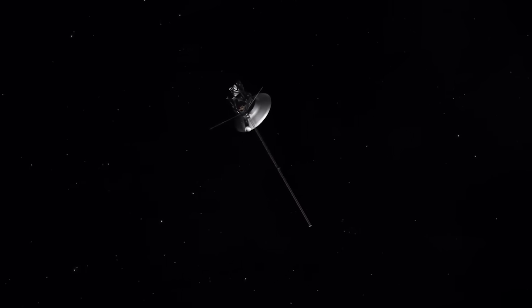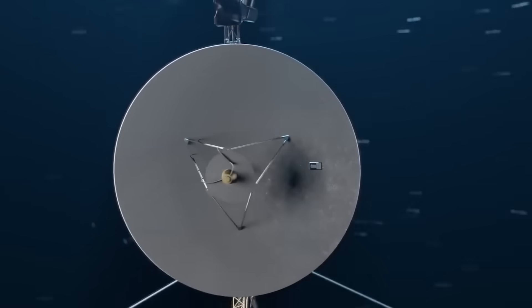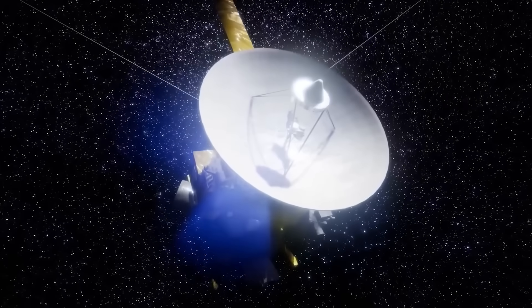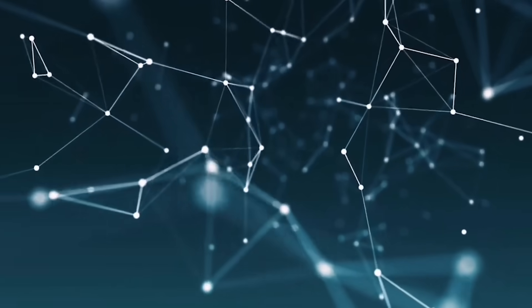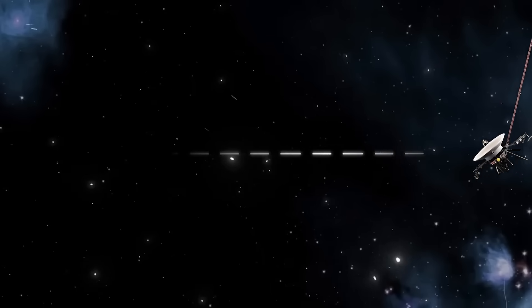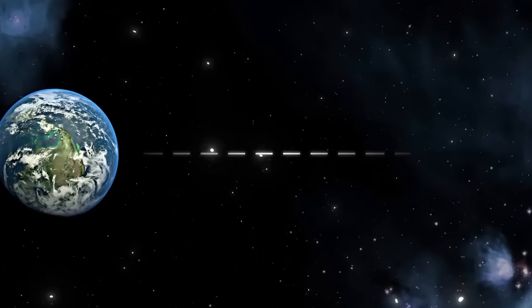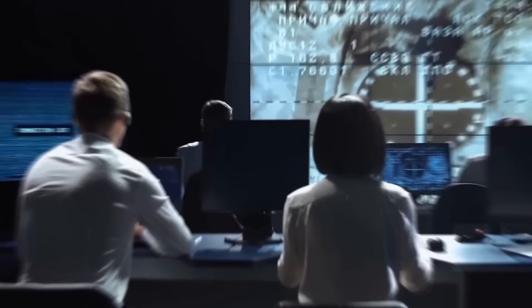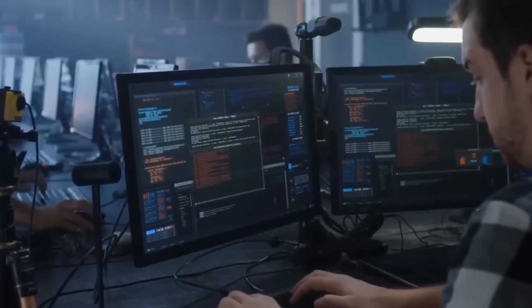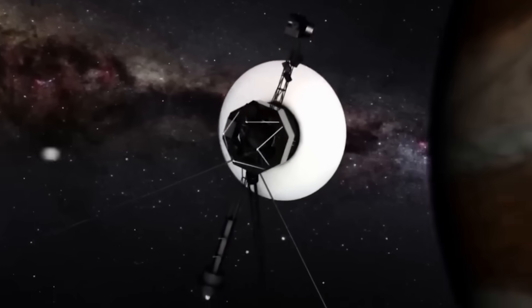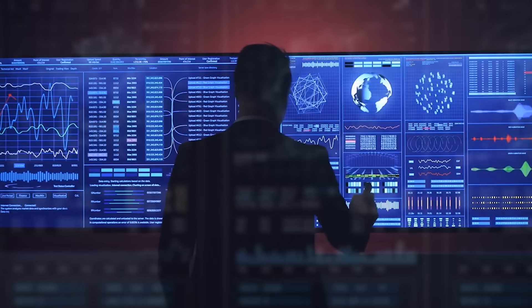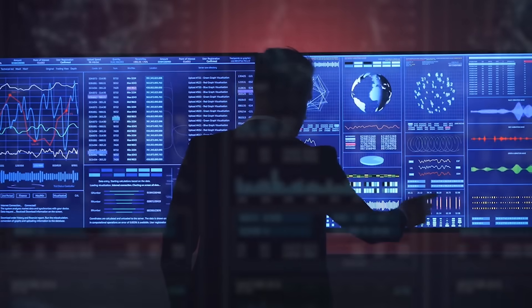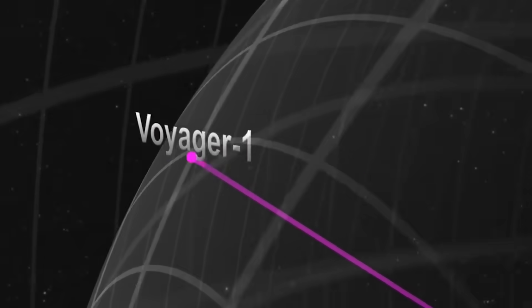The spacecraft was never equipped for remote reprogramming at this distance. Its systems are ancient by modern standards, still operating using 1970s-era computing. Its memory can be measured in kilobytes, not gigabytes. Commands sent from Earth take over 22 hours to reach it and another 22 to return. But the signal received had timestamps embedded within the code that didn't correspond with the last known command uplinks. More shockingly, some of the embedded signal structures referenced data sets from after the last command cycle, suggesting either a temporal anomaly or external data injection, two scenarios that bordered on the impossible.